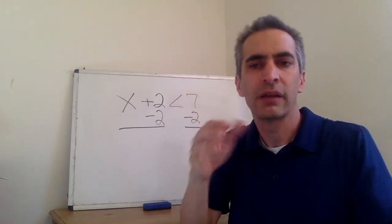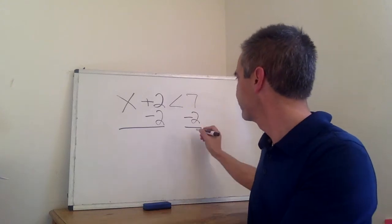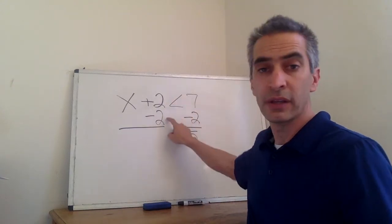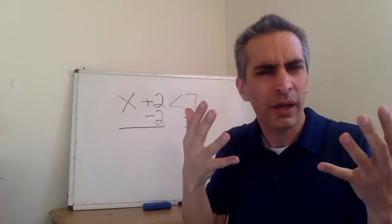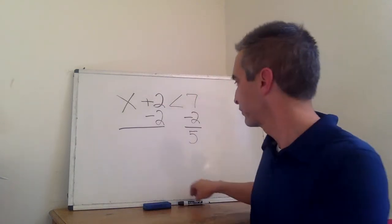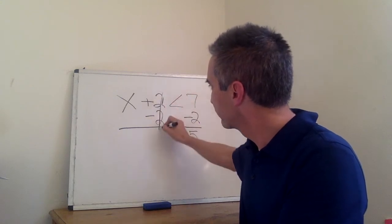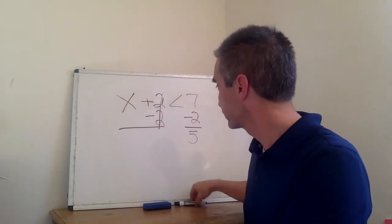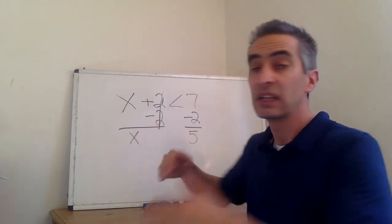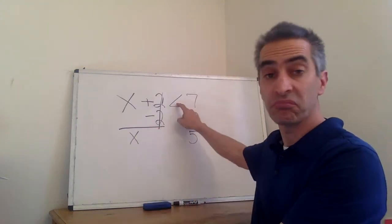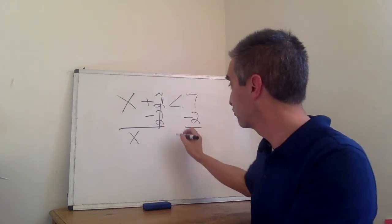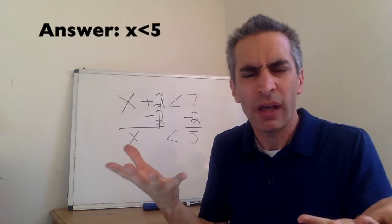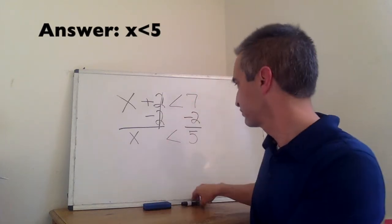Seven minus two equals five. And what is two minus two equal? Zero. We just bring down the X. The less than symbol also comes down. And so what is our answer? X is less than five.